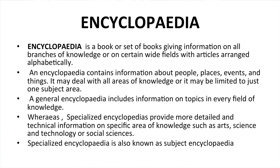Encyclopedia is a book or set of books giving information on all branches of knowledge, or on certain wide fields, with articles arranged alphabetically. An encyclopedia contains information about people, places, events, and things. It may deal with all areas of knowledge or may be limited to just one subject area. A general encyclopedia includes information on topics in every field of knowledge, while a specialized encyclopedia provides more detailed and technical information on specific areas such as arts, science and technology, or social sciences. Specialized encyclopedia is also known as subject encyclopedia.